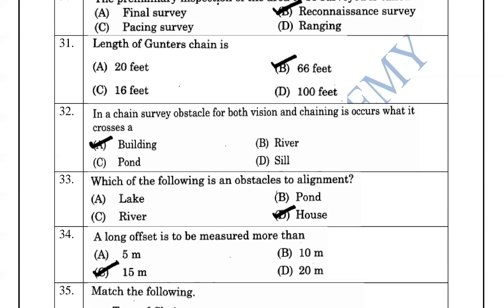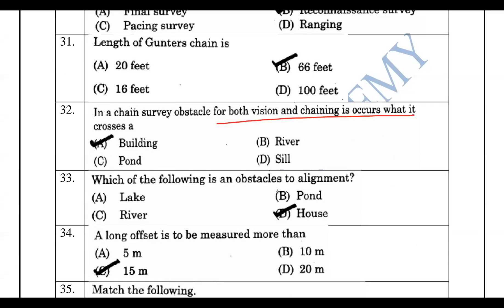The obstacle that obstructs both vision and chaining includes buildings. If the alignment is obstructed, the obstacle is a house or building.